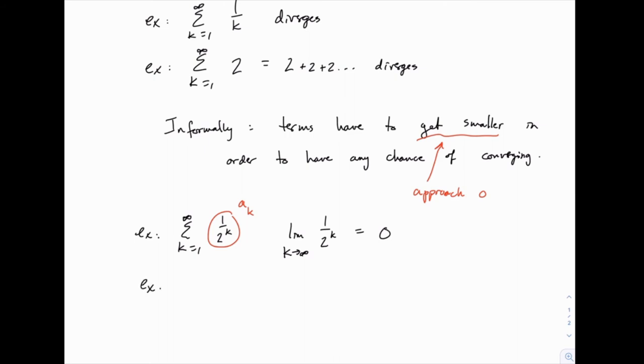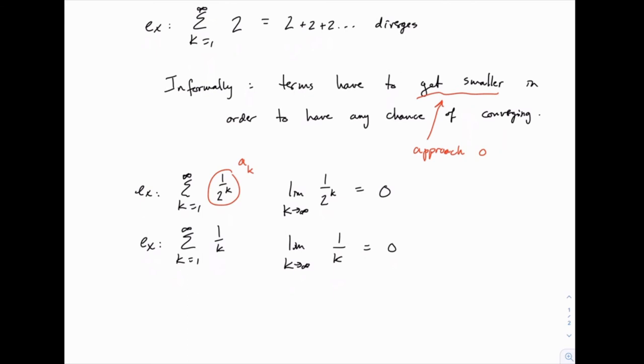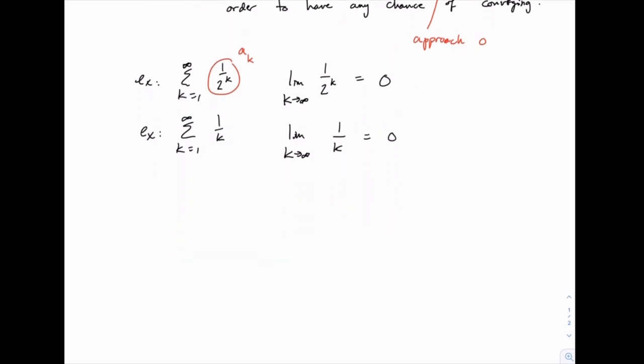Similarly, we could do the same thing for the harmonic series. We could take the limit as k goes to infinity of 1 over k. Again, that equals 0. So both of these series pass the divergence test, which doesn't tell us whether they converge or not. We just know that they haven't failed to converge dramatically according to this test. So as we know, one of them converges and one diverges.